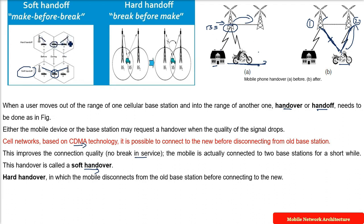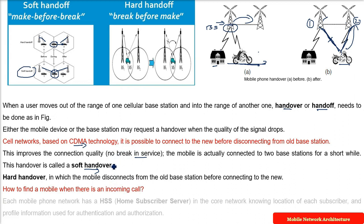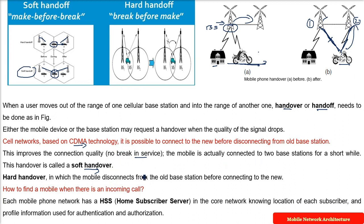How do you find a mobile when there is an incoming call? Each mobile phone network has an HSS — Home Subscriber Server — in the core network. It knows the location of each subscriber and the profile information including authentication, authorization, and account details. The HSS answers this question.